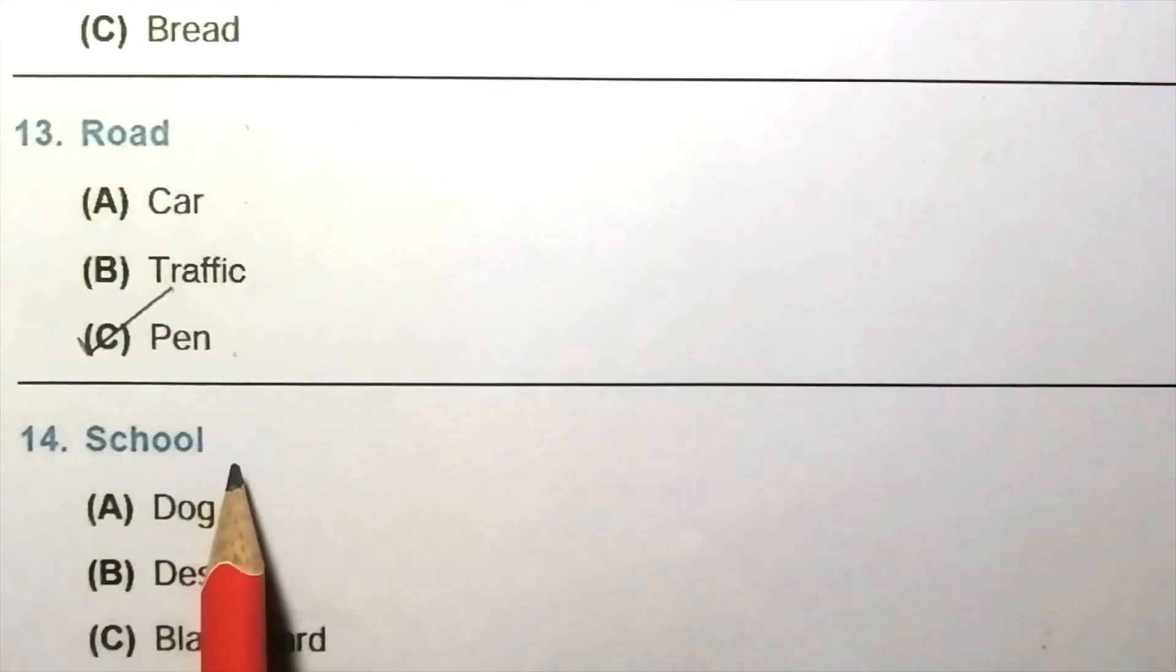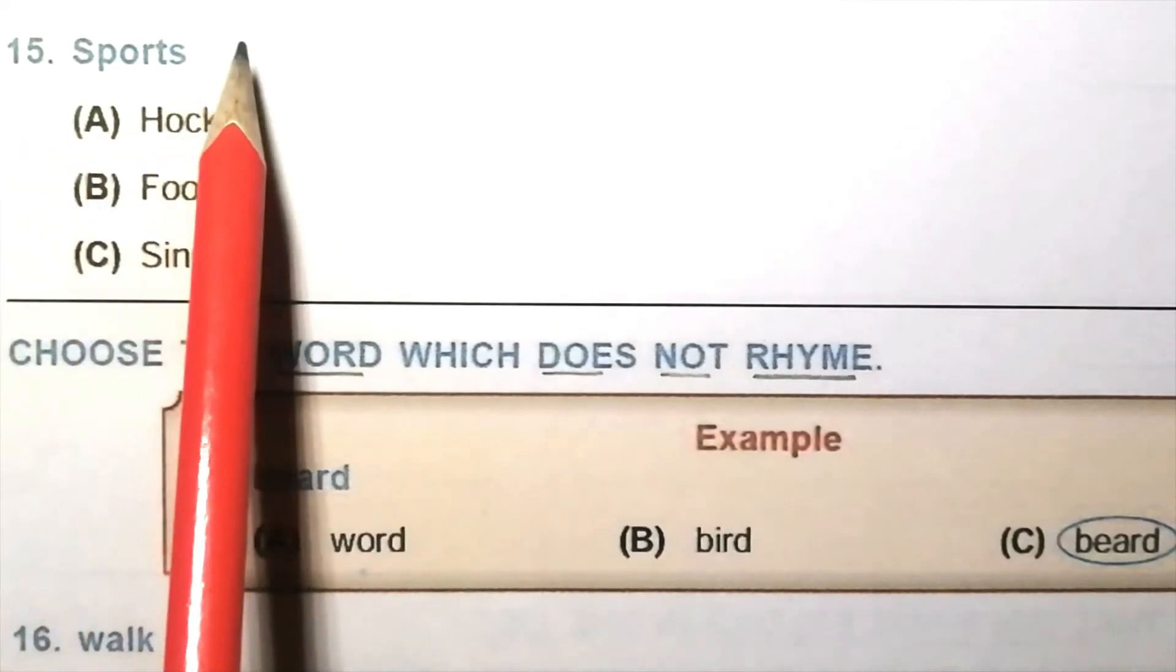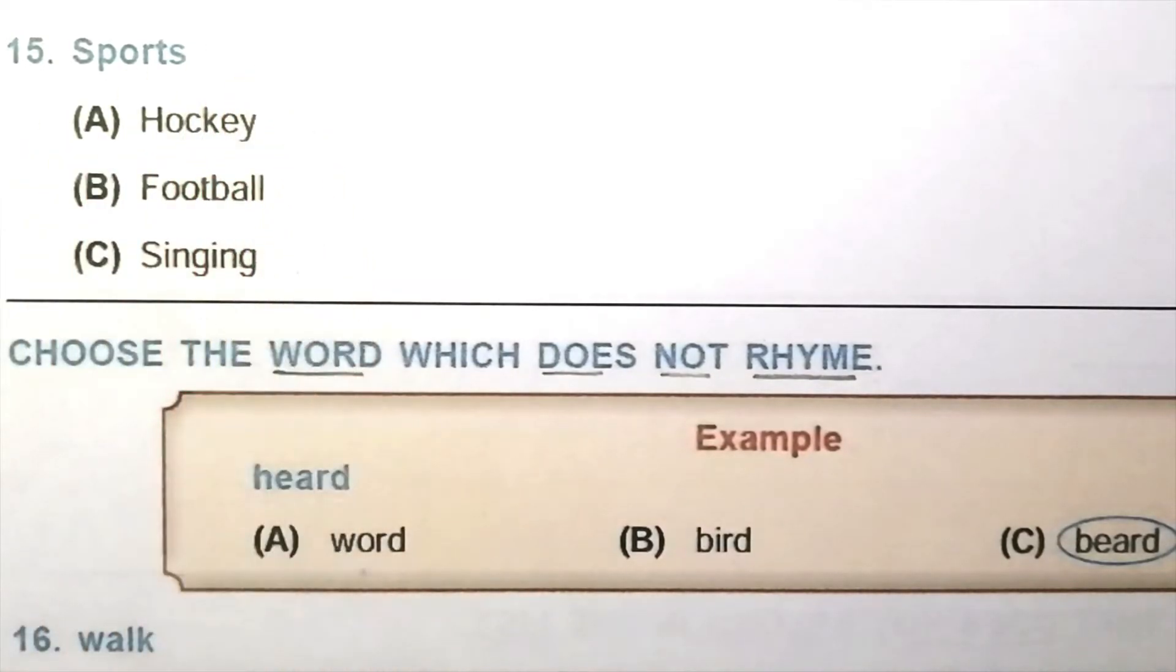Question 14: School. Dog, desk, blackboard. And here dog is not related with the word school. So the answer is A, dog. Question 15: Sports. Hockey, football, singing. And here singing is not related with sports. So the answer is C, singing.